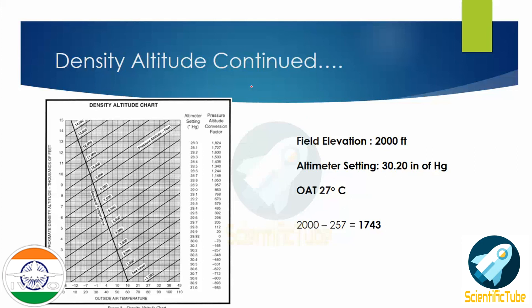Let's look at how to calculate density altitude. Suppose the field elevation is 2,000 feet, the altimeter setting is 30.20 inches of mercury, and the outside air temperature is 27 degrees centigrade. We refer directly to the chart, which gives us the pressure altitude correction factor.